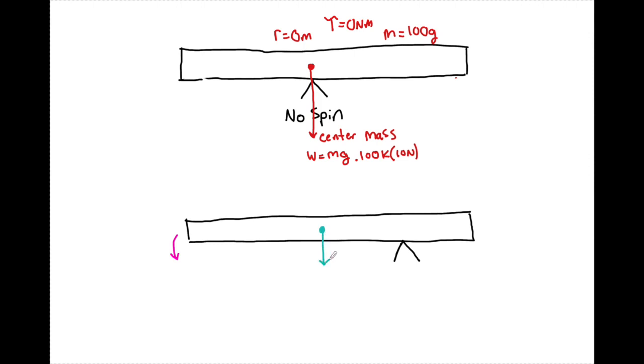R is still the distance from where that object wants to spin. So now, if I want this thing to balance, I have to offset this torque force here by adding another force over here that has an equal torque to this force.